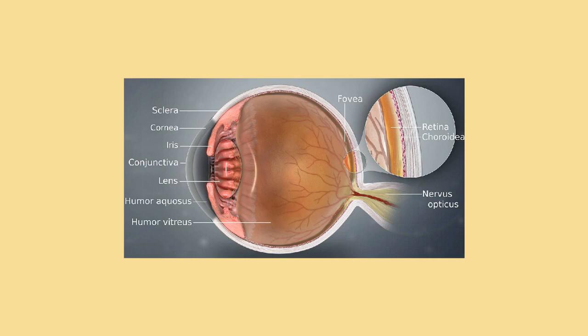The innermost is the retina, which gets its oxygenation from the blood vessels of the choroid posteriorly, as well as the retinal vessels anteriorly. The spaces of the eye are filled with the aqueous humor anteriorly, between the cornea and lens, and the vitreous body — a jelly-like substance — behind the lens, filling the entire posterior cavity.